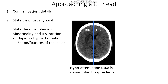Infarcted tissue tends to swell up, leading to edema. Edematous tissue pressing on nearby structures may cause squishing or effacement of certain structures, such as the ventricles here. We can see that if we compare the right anterior horn of the right ventricle, it's a lot more squished than the left-hand side. As well as this, we are not able to differentiate different types of tissue due to the fact that they have infarcted and swollen up, leading to a phenomenon known as loss of grey-white differentiation.